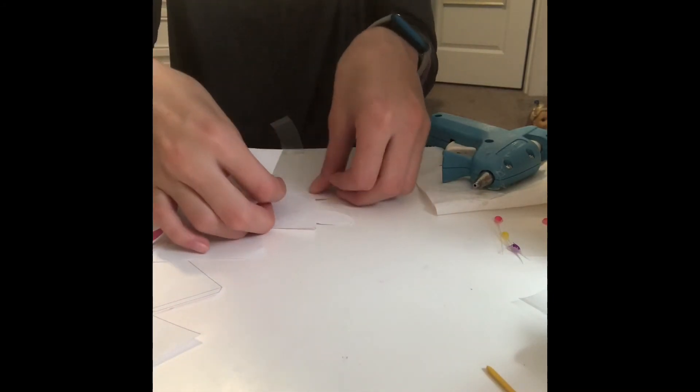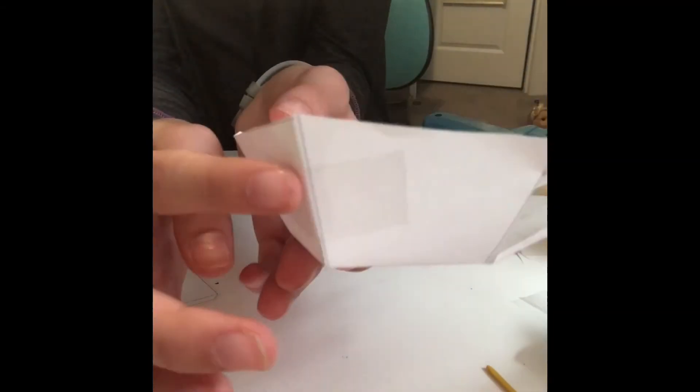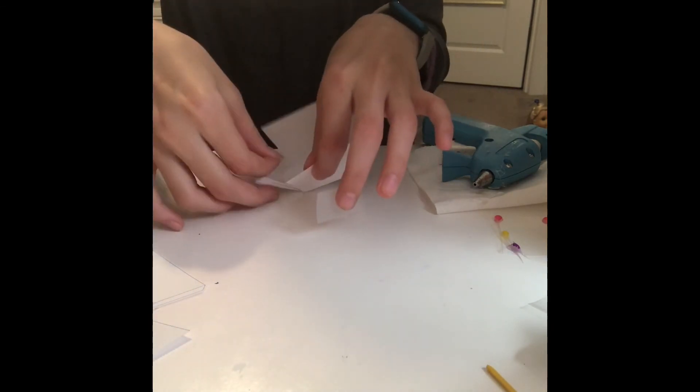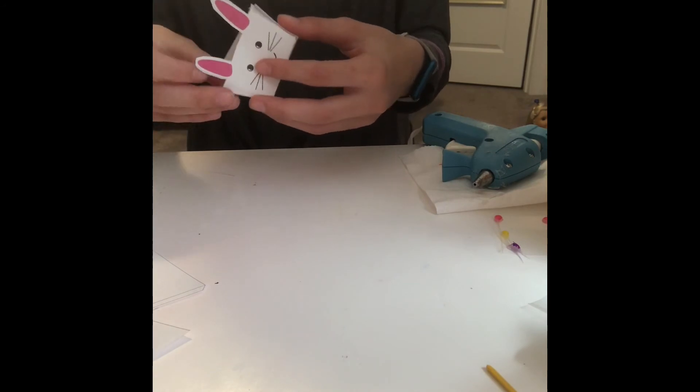Once you have done that on all the sides you can start putting your Easter basket together. You're going to want to take either glue or tape and make sure you put the tab under and put a piece of tape between the sides. Do that on all four sides. You can do it on the outside but I would recommend doing the tape on the inside for the face of the bunny so you don't cover the bunny up. Basically you just put the tape inside instead of outside so you can see the bunny's face.